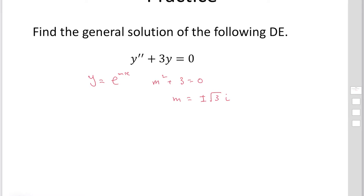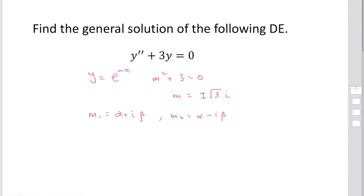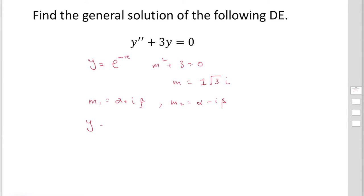For complex roots where m₁ = α + iβ and m₂ = α - iβ, the general solution is y = e^(αx)(c₁cos(βx) + c₂sin(βx)). This is the general solution.